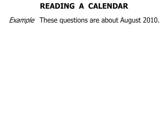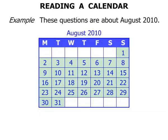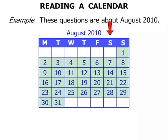In this lesson we do some work on reading a calendar. These questions are about August 2010. So there's the calendar for that month. The M stands for Monday, T for Tuesday, Wednesday, Thursday, Friday, Saturday and Sunday.